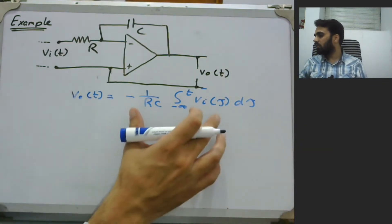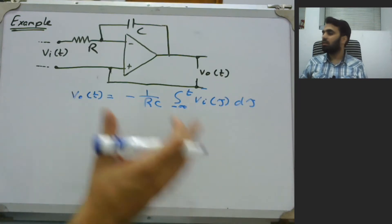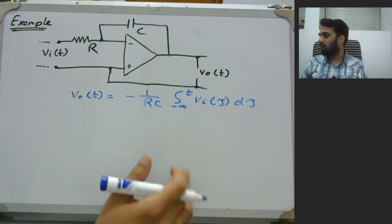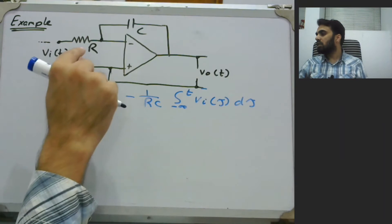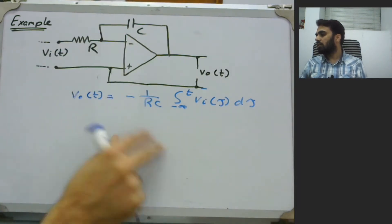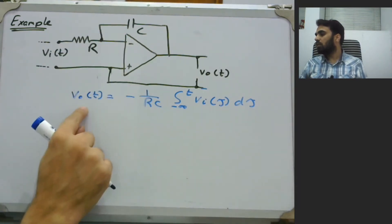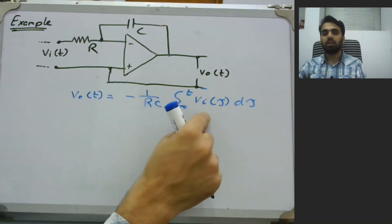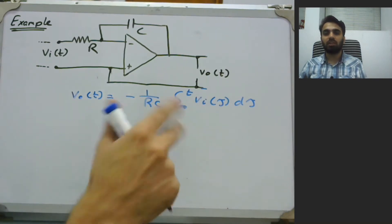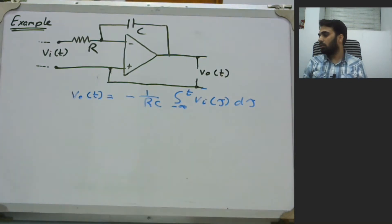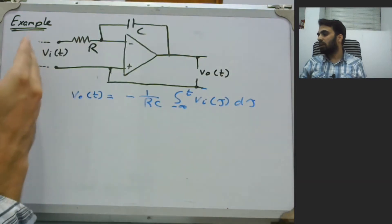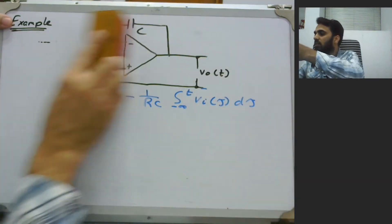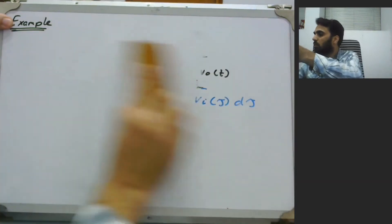From this expression you would know that this is our integrating amplifier. If you interchange R and C, the output would actually be in terms of the differentiation of the input VI of T, so that would be a differentiating circuit. So we have an output in terms of an integration of an input, and we can simplify this in terms of a simple block diagram.